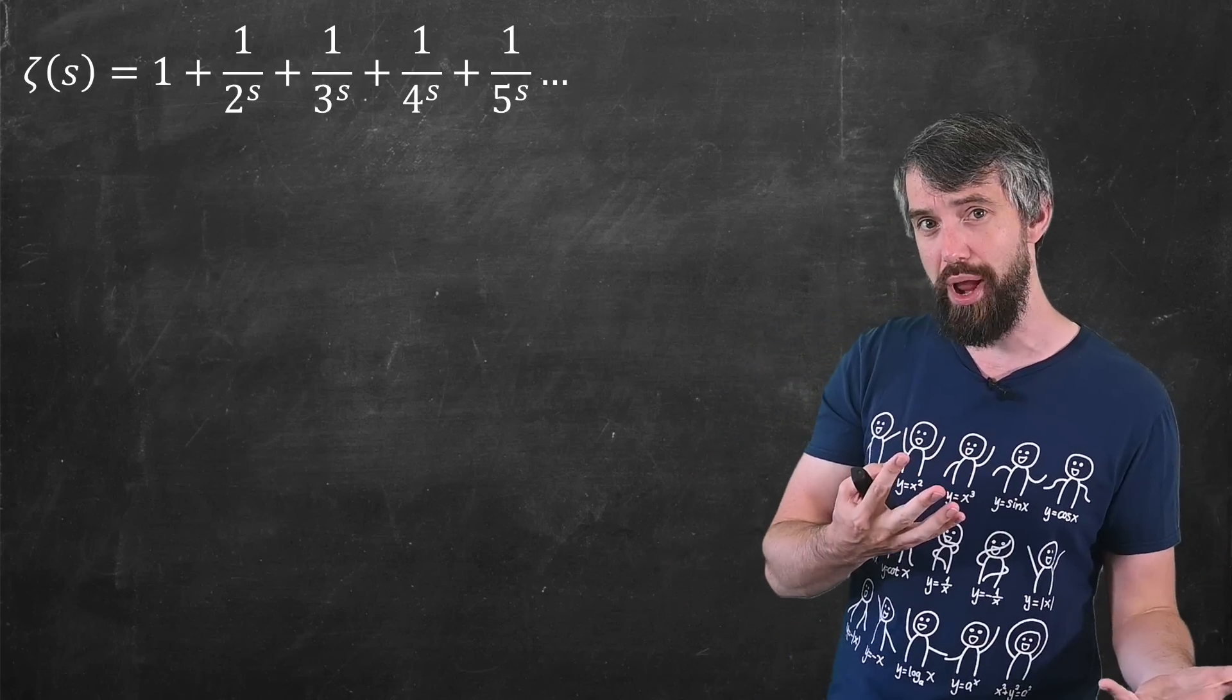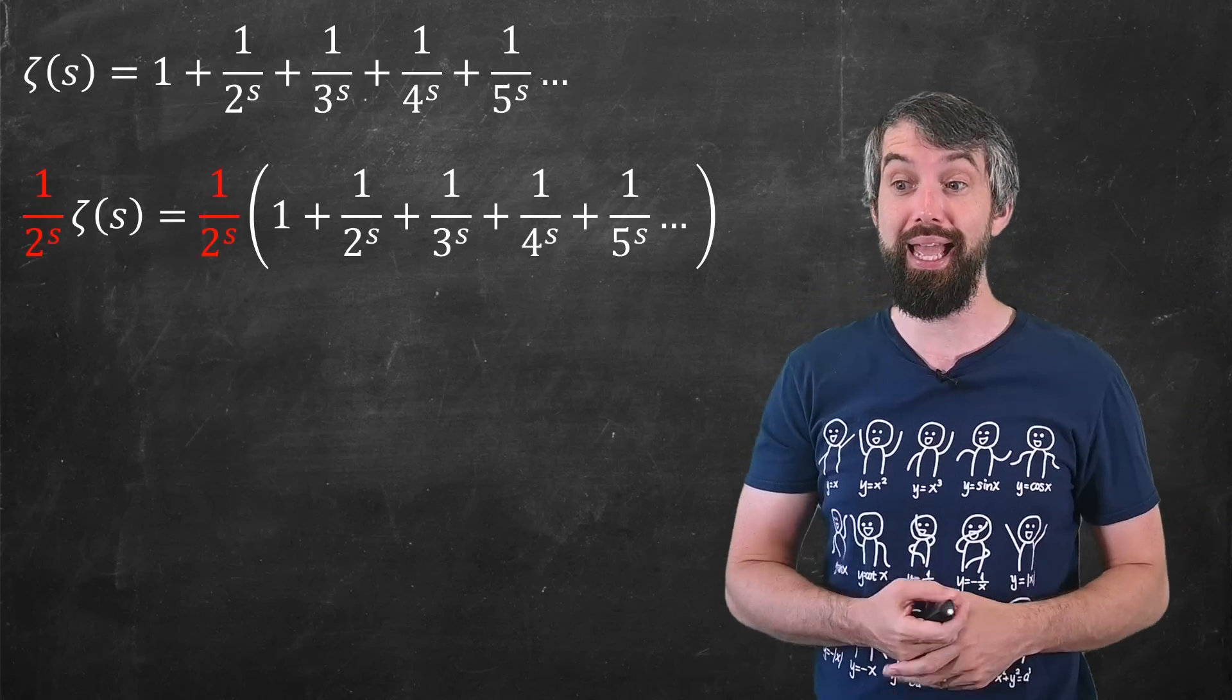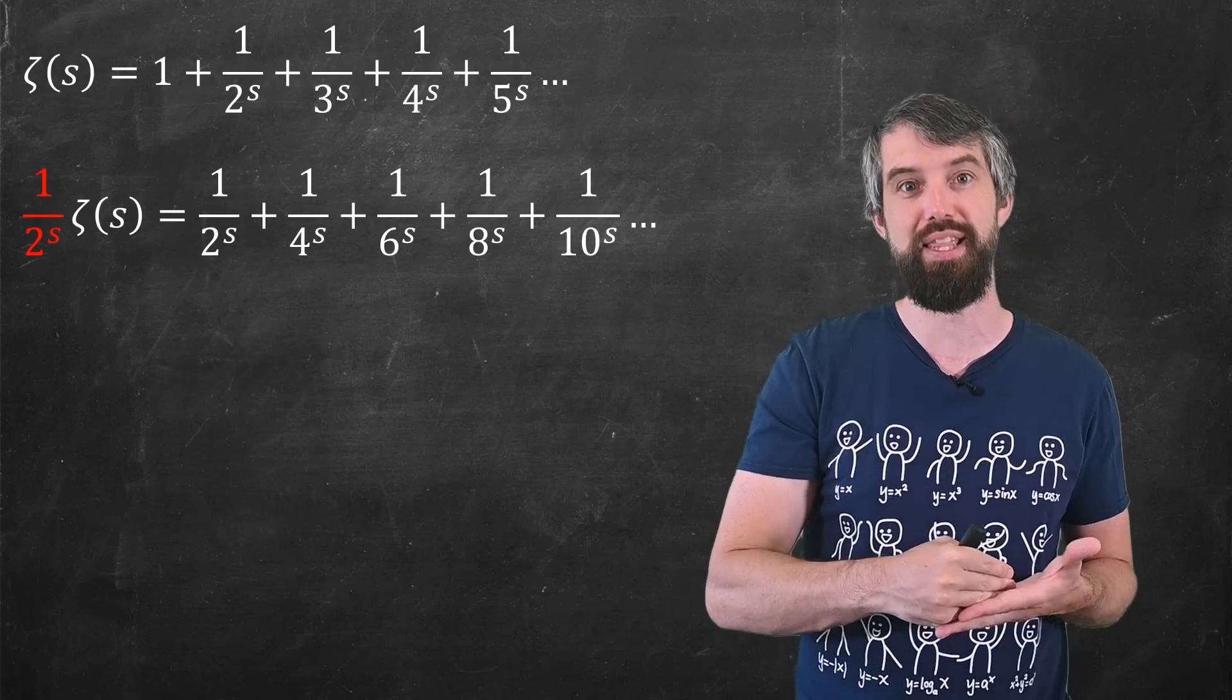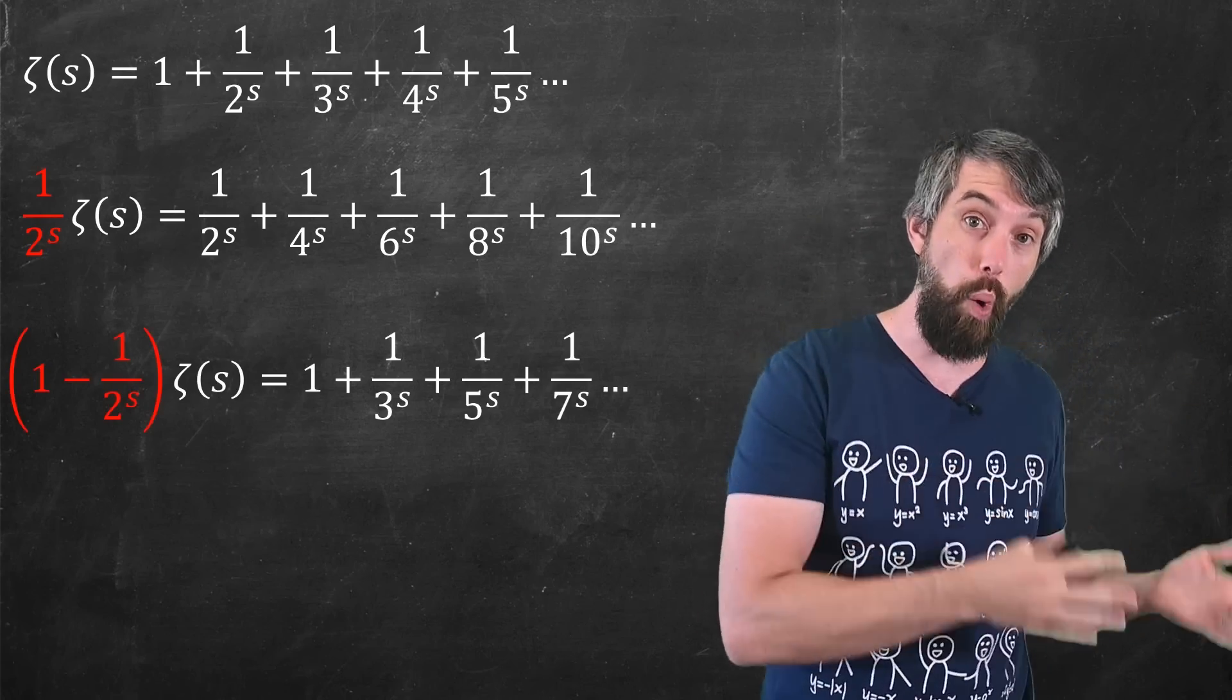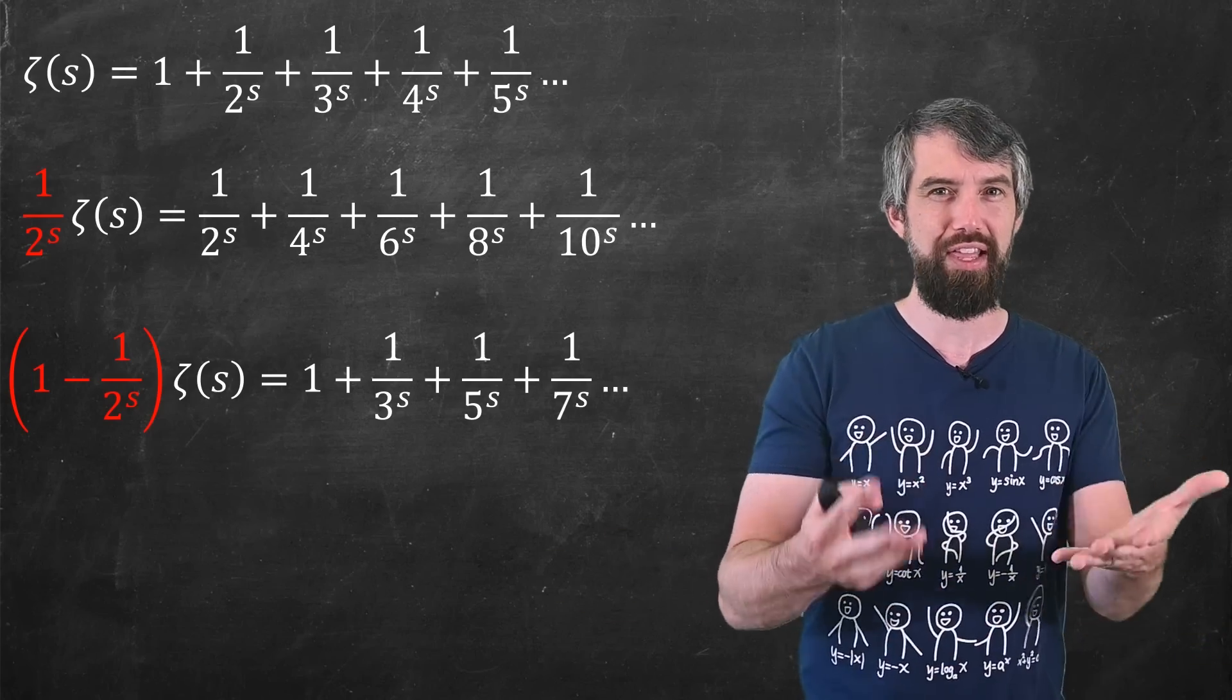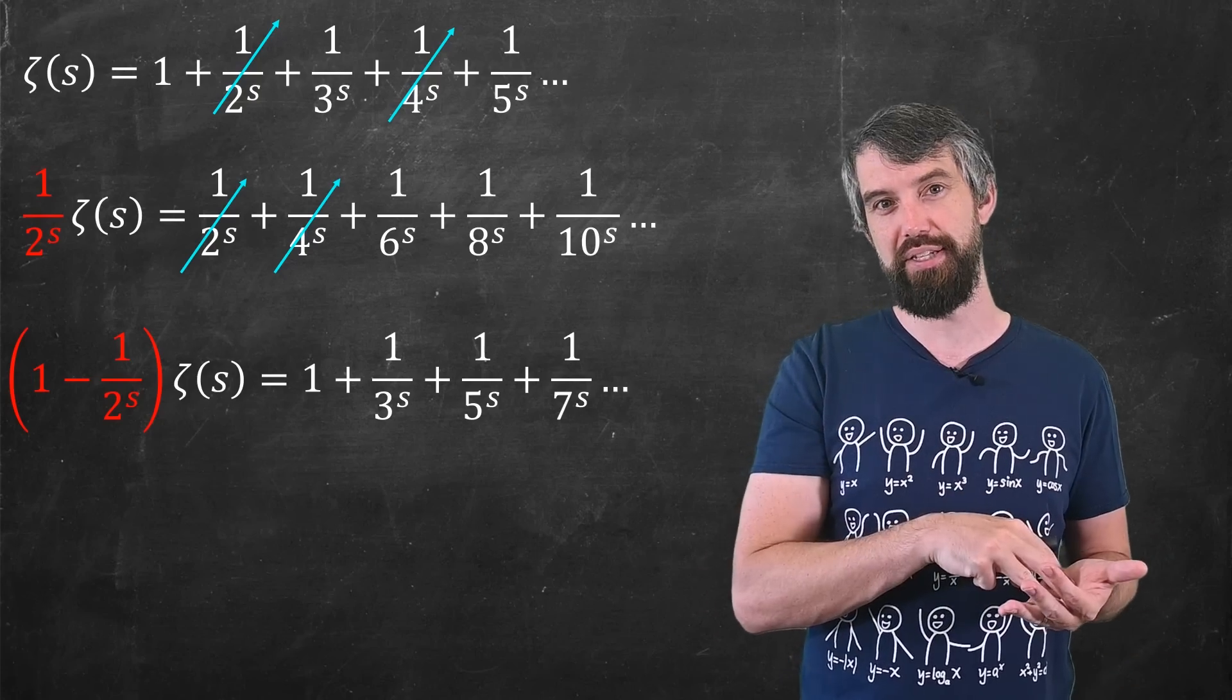Let's imagine I'm working with an s where this thing converges. I can do a little bit of trickery. Let me take this zeta function and multiply it by 1 over 2 to the s. If I look at all the terms in my sequence and I bring in the 1 over 2 to the s, this has the effect of making everything multiplied by 2. So my denominators become 1 over 2 to the s, 1 over 4 to the s, 1 over 6 to the s, all evens. Let's take the top and subtract it from the bottom. In other words, what I'm considering is 1 minus 1 over 2 to the s times the zeta function. So if I subtract this, all the even ones go away. So what I'm left with, only has odds on the bottom: 3 to the s, 5 to the s, and 7 to the s.